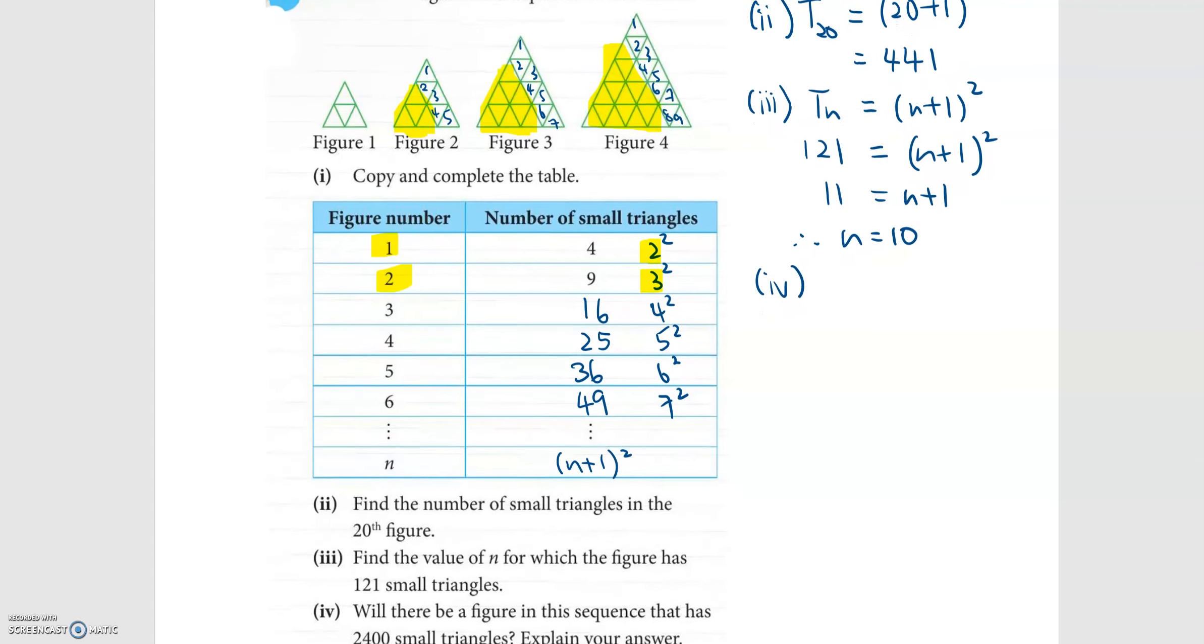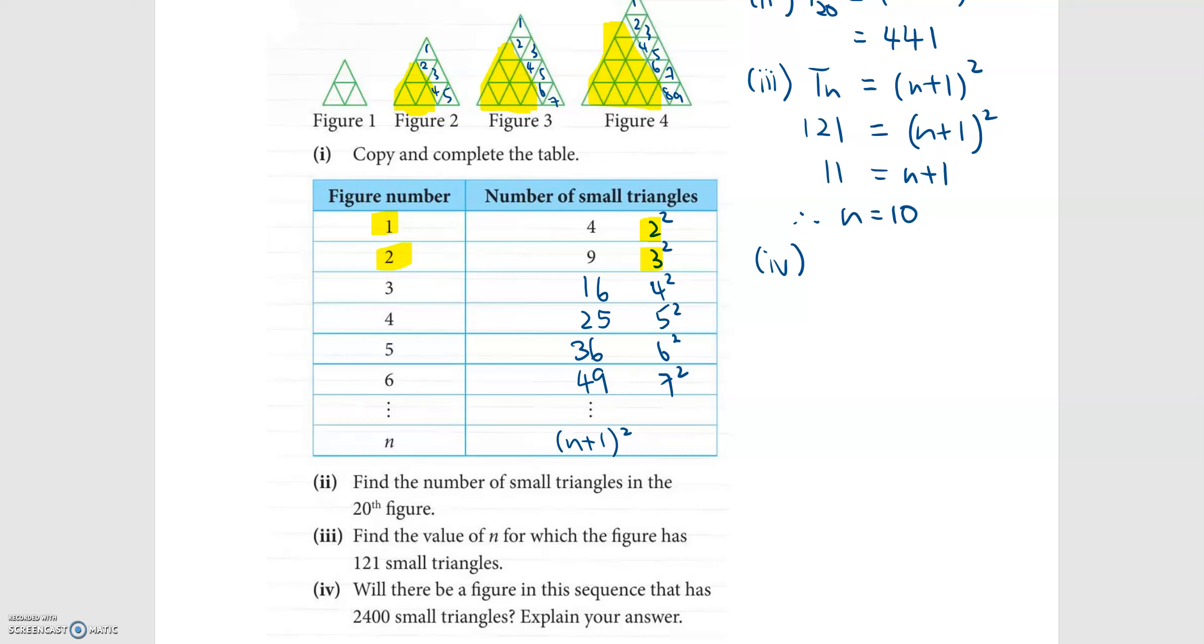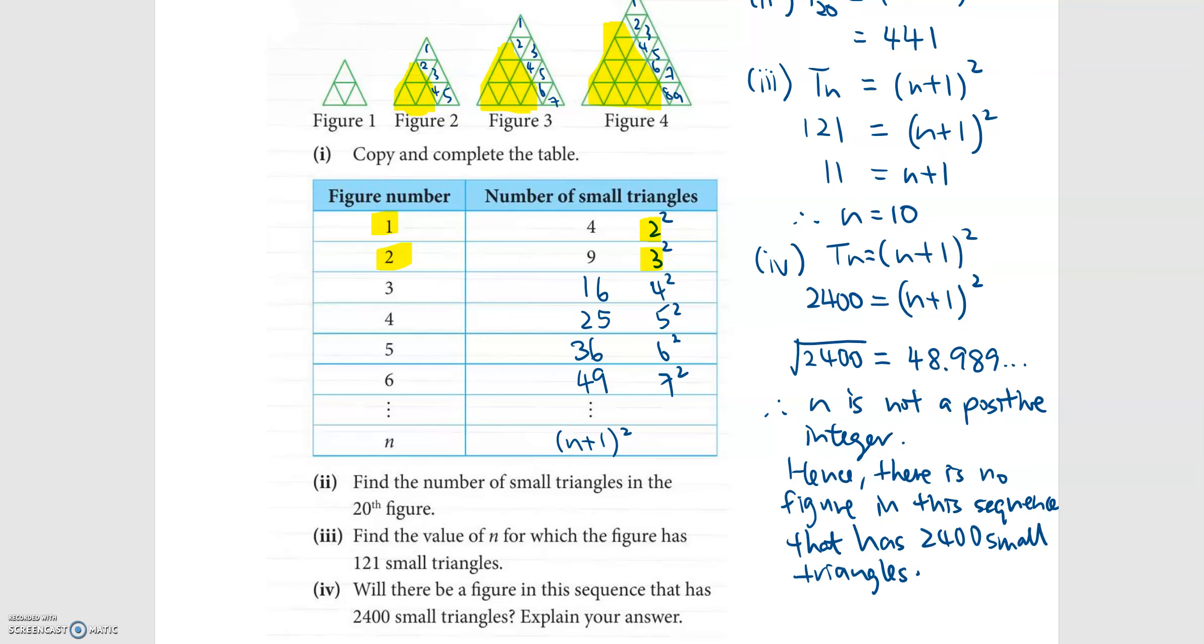Part four asks if there will be a figure in this sequence that has 2400 small triangles. So I will have to check. So T_n is n plus one squared. If I have 2400 small triangles and it can fit in, then I will get a positive integer for n. So if I work things out, I will not be able to get a positive integer for n. So there will not be any figure in this sequence that has 2400 small triangles.